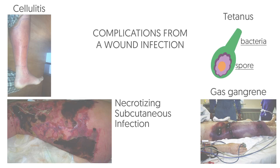Complications from a wound infection may involve the following. Cellulitis is an infection of the skin caused by bacteria entering the body via a wound and spreading to deeper tissues beneath the skin. Tetanus, or lockjaw, is an infection with the bacterium Clostridium tetani, which produces toxins that interfere with muscle contractions, causing severe muscle spasms. Necrotizing subcutaneous infection, or necrotizing fasciitis, is a severe infection that causes necrosis of the innermost layer of skin and can lead to gangrene — the death of tissue caused by critically insufficient blood supply.